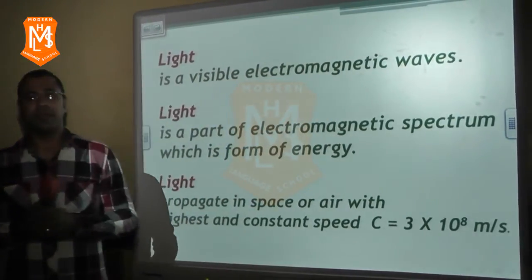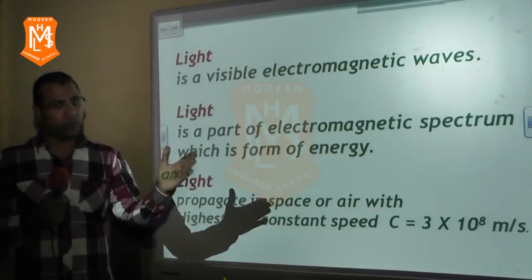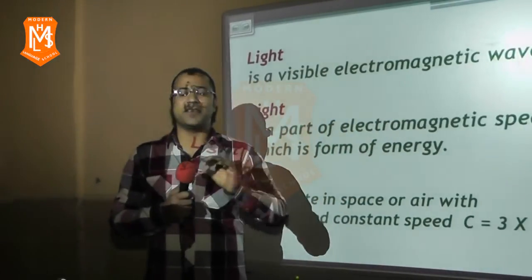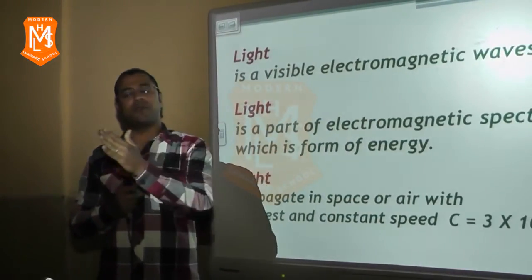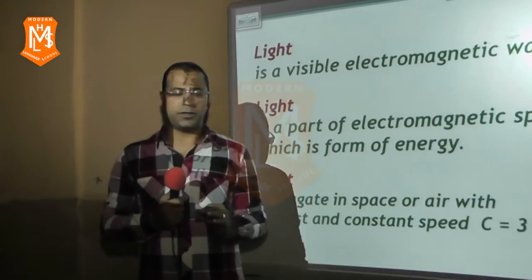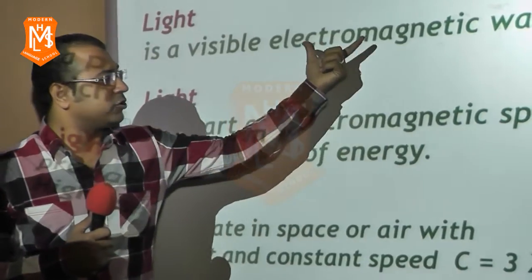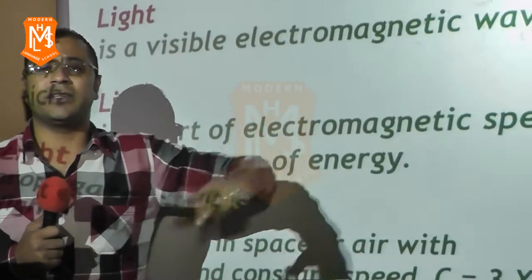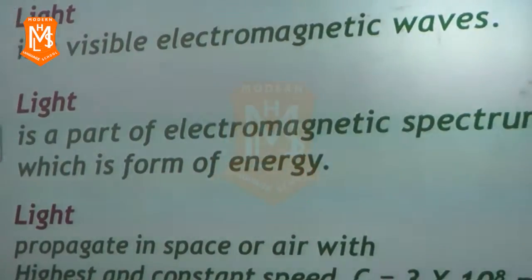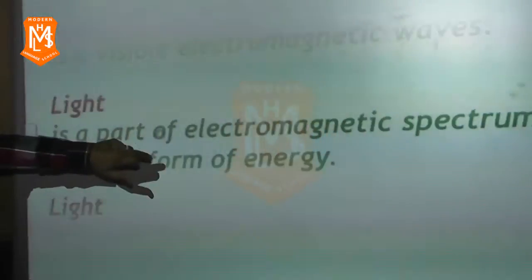Spectrum: white light consists of seven spectrum colors which start from red and end with violet color. Light is a part of electromagnetic spectrum. Light is a visible part. Second point, what are electromagnetic waves?